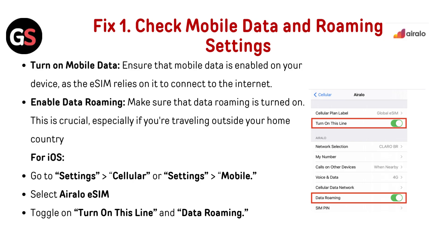For iOS: go to Settings, then Cellular, or Settings then Mobile. Select the AirLo eSIM, toggle on 'Turn on this line' and enable Data Roaming.